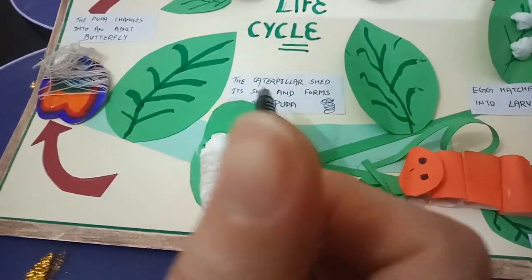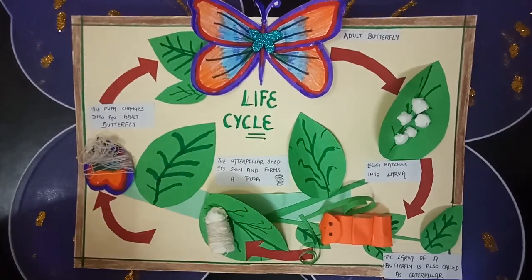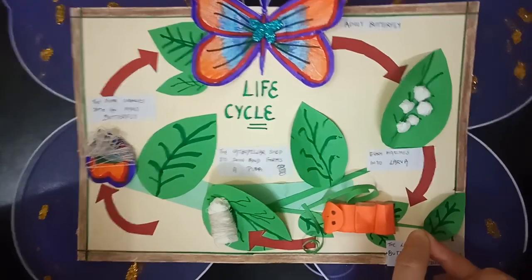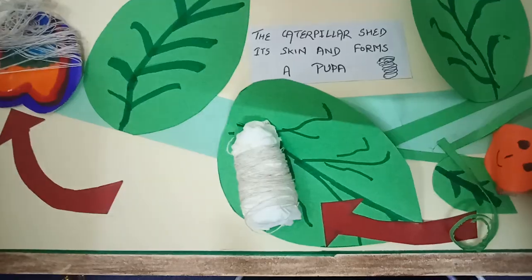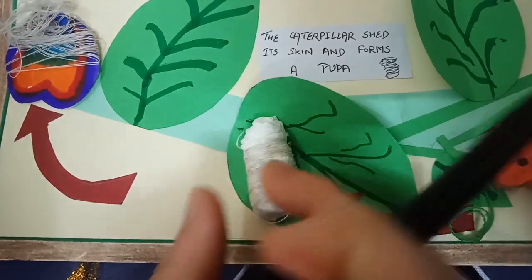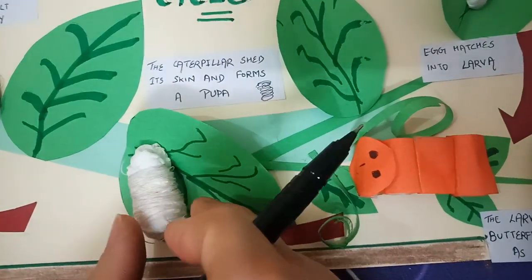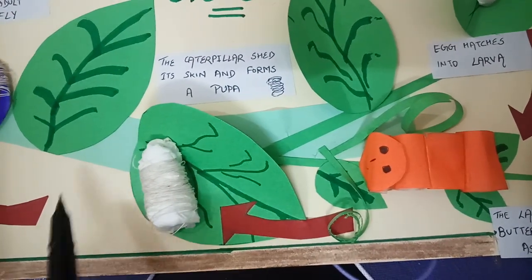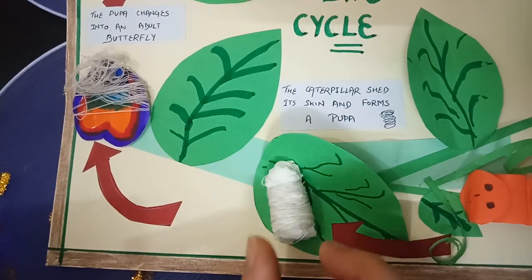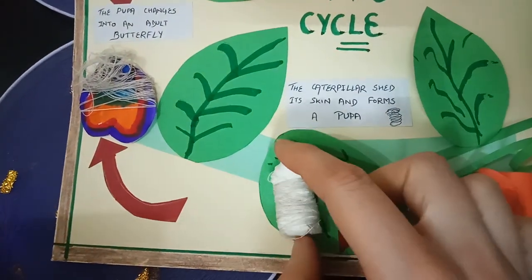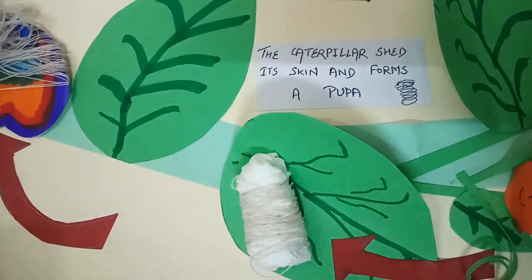The caterpillar sheds its skin and forms a pupa. When the caterpillar reaches its final size, it stops feeding and gradually removes its old skin four to five times, then wraps itself in a covering called a cocoon — made of silky threads. Inside the cocoon, the caterpillar changes into a pupa, also known as chrysalis.